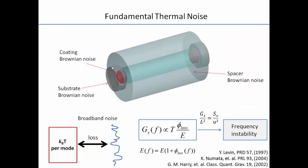Let's have a brief review about thermal noise. Thermal noise mainly comes from the Brownian motion of the coating, substrate, and spacer. That Brownian noise introduces broadband noise, which causes the mirror surface to fluctuate, changes the cavity length, and then imposes frequency noise on the laser, which is referenced to the cavity length.